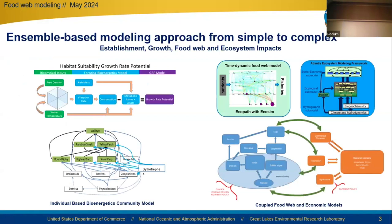Our approach over the years has been an ensemble-based modeling approach, ranging model complexity from simple to complex. These efforts address issues of establishment of invasive species and response of communities, food webs, and regional economies to anthropogenic stressors. Models have included spatially explicit bioenergetics models for quantifying habitat quality and quantity, individual-based or agent-based models, ecological and social network analysis, and established modeling frameworks including Ecopath with Ecosim and the Atlantis Ecosystem three-dimensional modeling framework, with some fully linked to economic models. Note that the Atlantis framework integrates physics, biochemical cycling, and food web interactions, and is the most complex of all our approaches.